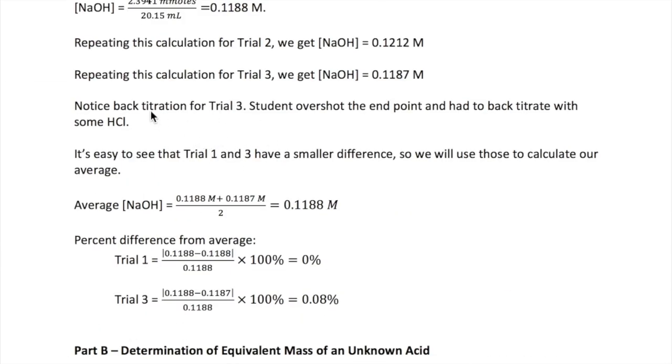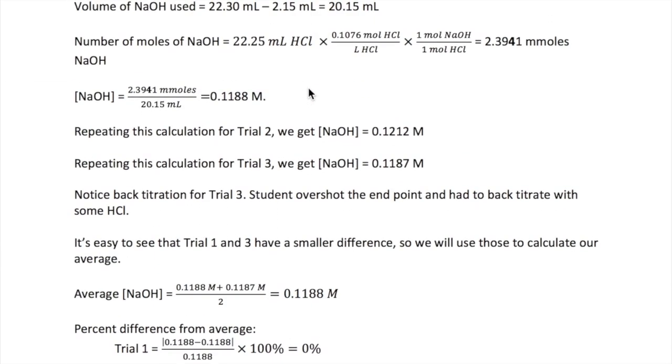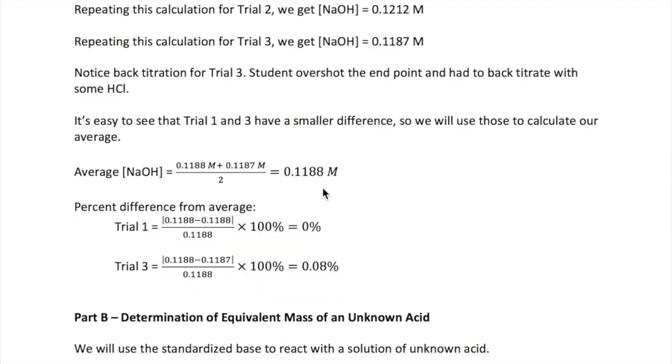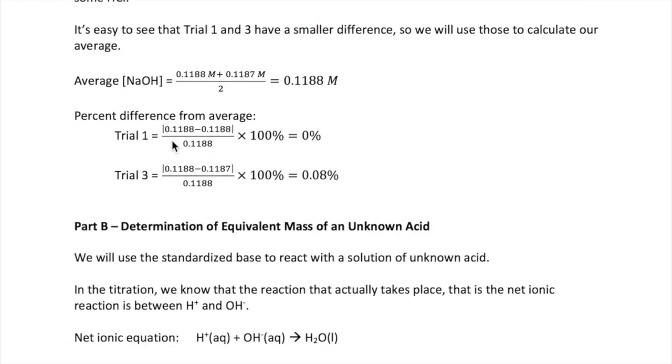Once you calculate the concentration of NaOH for all three trials, what you need to do is find two of the trials that are within 1% of each other. It's pretty obvious that trial one and trial three fits this category. So those are the two numbers that we will use to calculate our average NaOH concentration. The average ends up being 0.1188 molar with the correct sig fig. And then you can calculate the percent difference from the average, which is done by taking the absolute value of the difference between the average and the experiment divided by the average times 100%.